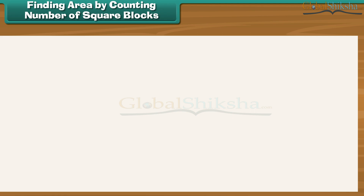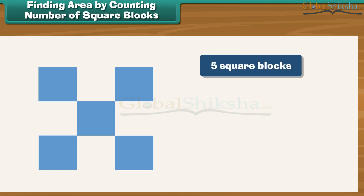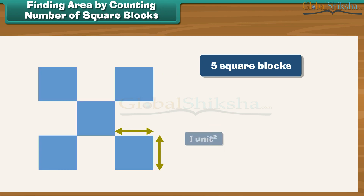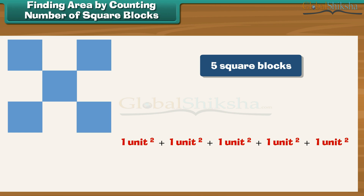Now let's calculate the area of a figure that contains five square blocks, where the length of each square block is one unit. The area of one square block of one unit length is one unit square. So the area of the complete figure is one unit square plus one unit square plus one unit square plus one unit square plus one unit square, which equals five into one, giving five unit square.